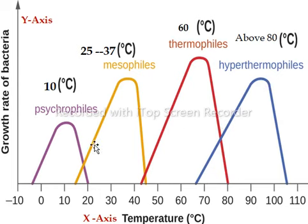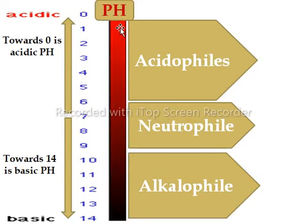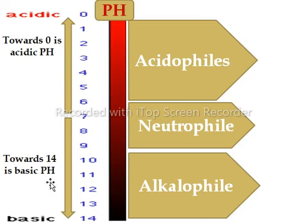This graph shows that different bacteria require different temperatures for their growth. Then we have the next factor affecting bacterial growth: pH. Here we discuss groups of bacteria that grow according to pH. pH may be acidic or basic — below 7 towards 0 is acidic pH, and above 7 towards 14 is alkaline or basic pH.